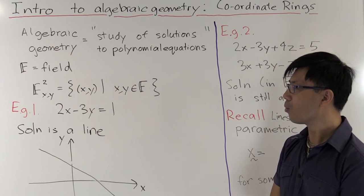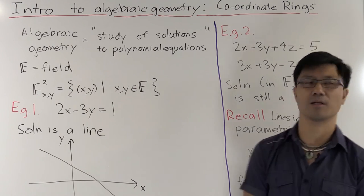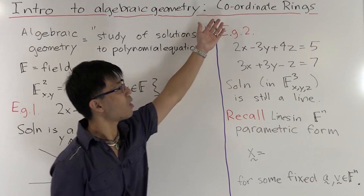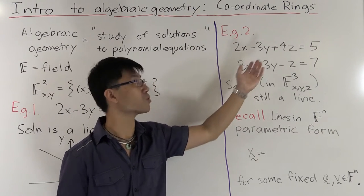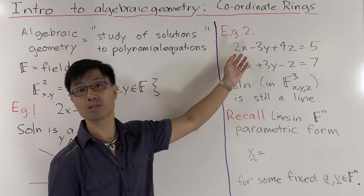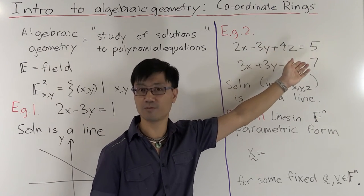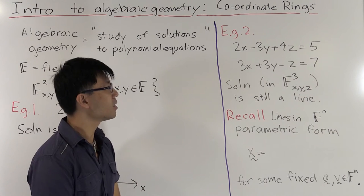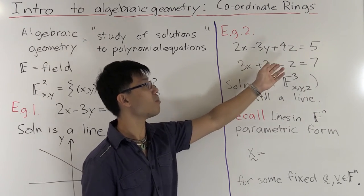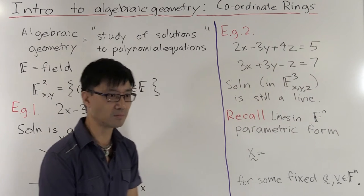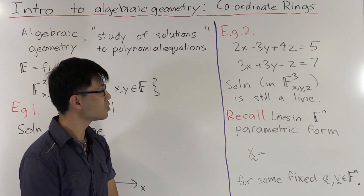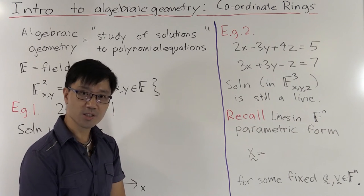Okay, so what about something more complicated? What's the next thing that you would look at? Well, let's suppose now we have three variables x, y and z, and we can look at another linear equation like 2x minus 3y plus 4z equals 5. And for good measure, let's suppose we add another linear equation like 3x plus 3y minus z equals 7.